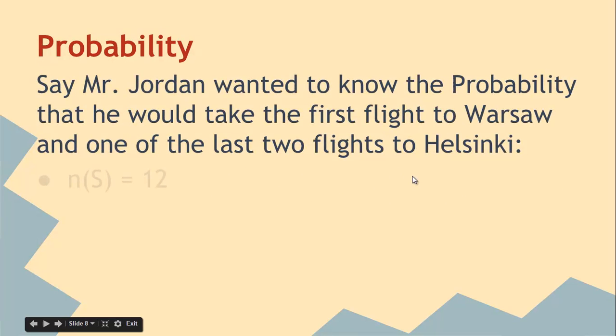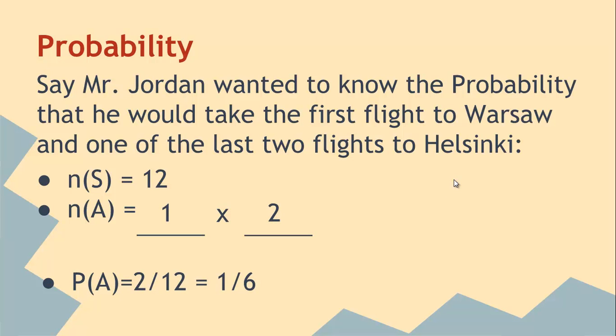For probability, if we want to talk about probability, we could use the fundamental counting principle again. So if you want to take the first flight to Warsaw and one of the last two flights, we can put two slots down. We got one way to do the first flight and two ways to do the next, and so there's two out of twelve, which is one out of six.